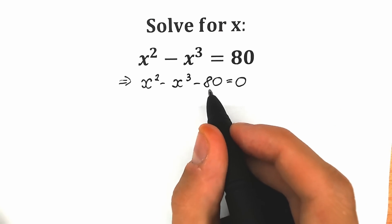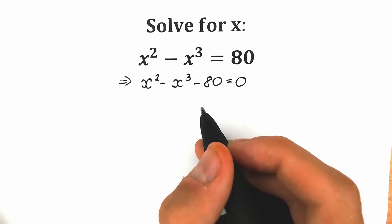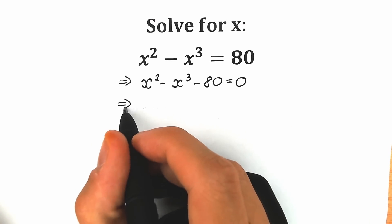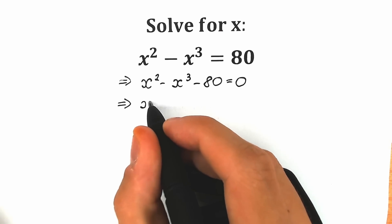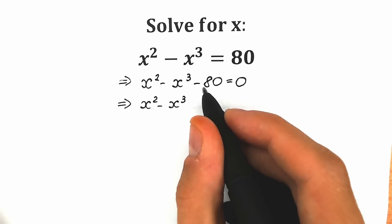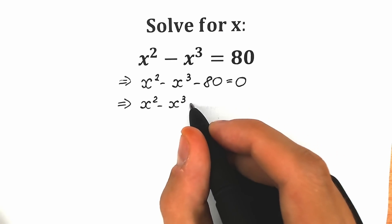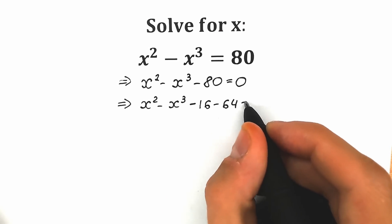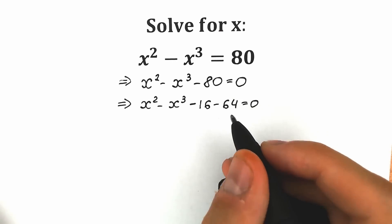Right now let's write 80 as 64 plus 16. According to the minus sign, we need to change these signs. So we have x squared minus x cubed, and instead of 80 we write minus 16 minus 64, equal to zero. We just replaced 80 with 16 plus 64.